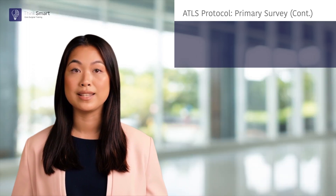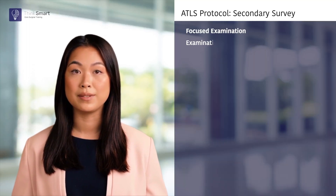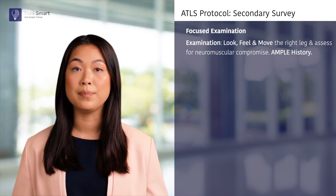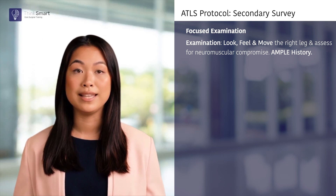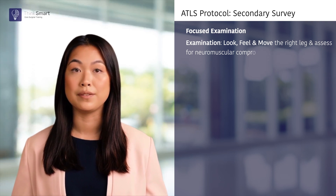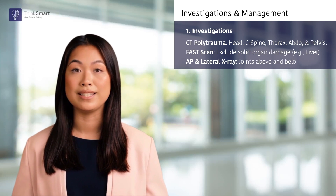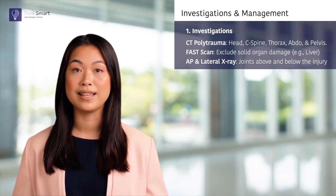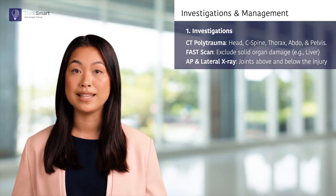Once the primary survey is complete, I would initiate the secondary survey by closely examining the affected limb — looking, feeling, and moving the right leg — and would also assess the neurovascular status. I would take an AMPLE history from this patient. For completion, I would consider a CT trauma series and a FAST scan to exclude other serious injuries, and would request an AP and lateral radiograph of the right limb to include the joints above and below the injury.